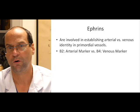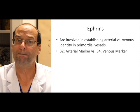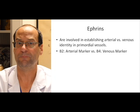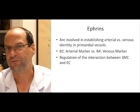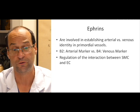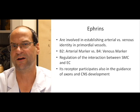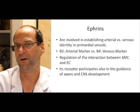The third family of growth factors acting on the endothelium are the ephrins. While angiopoietins were maturing the blood vessel and VEGF was making blood vessels, the ephrins are telling the blood vessel about its identity — i.e., whether it will become an artery or a vein. Ephrin B2 is an arterial marker whereas ephrin B4 is a venous marker. Interestingly, the ephrins are also important for the regulation of the interaction between smooth muscle cells and endothelial cells, and their receptor participates also in the guidance of axons and CNS development. This is of importance when looking at the fact that certain vascular malformations can be associated with brain developmental malformations.